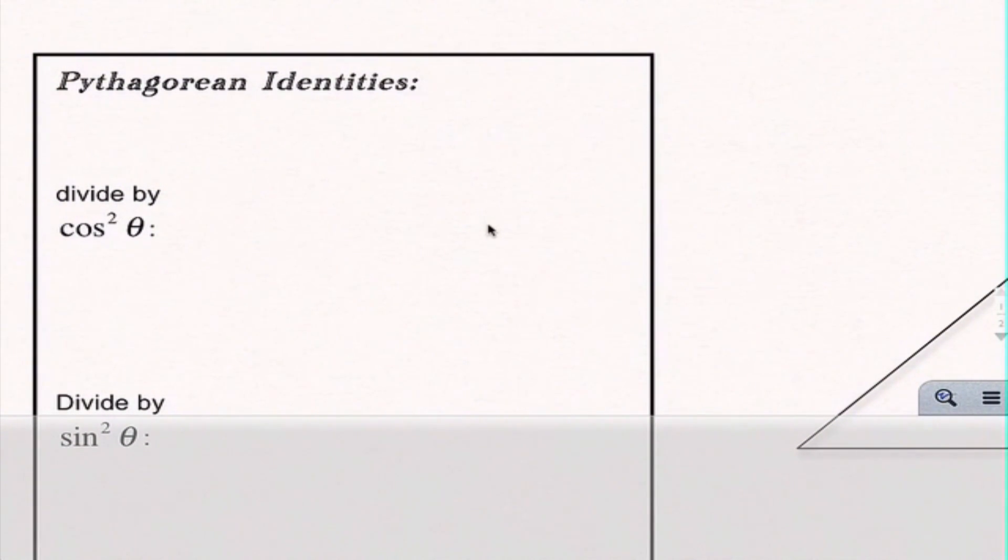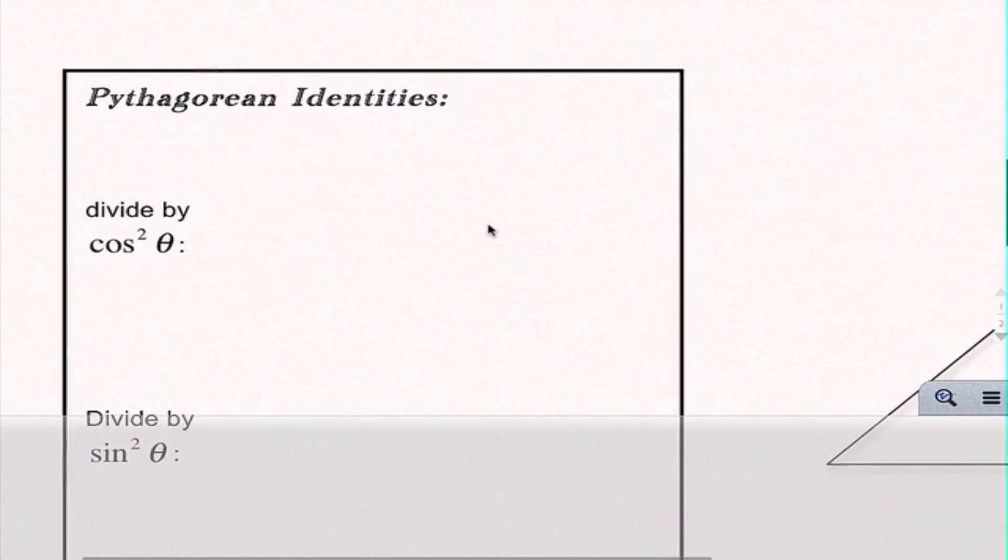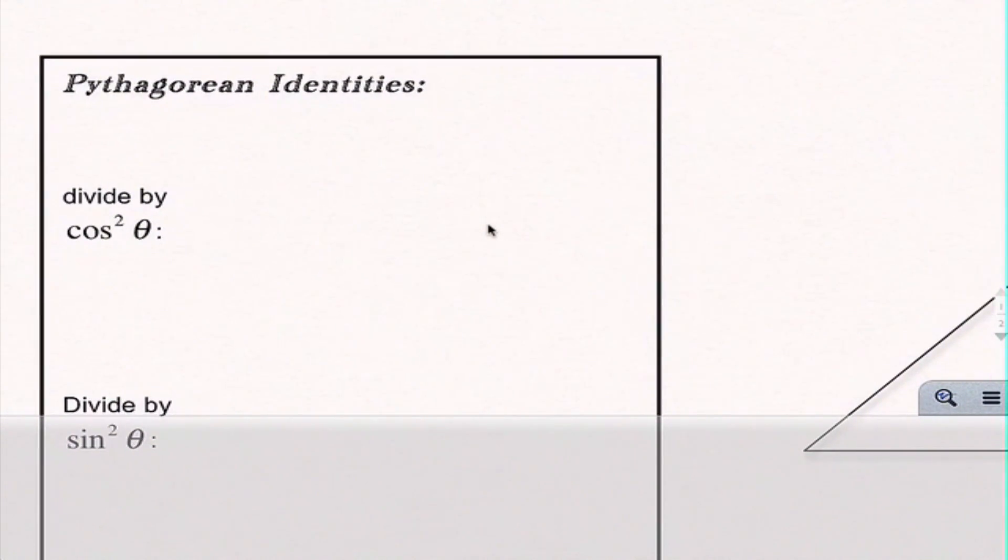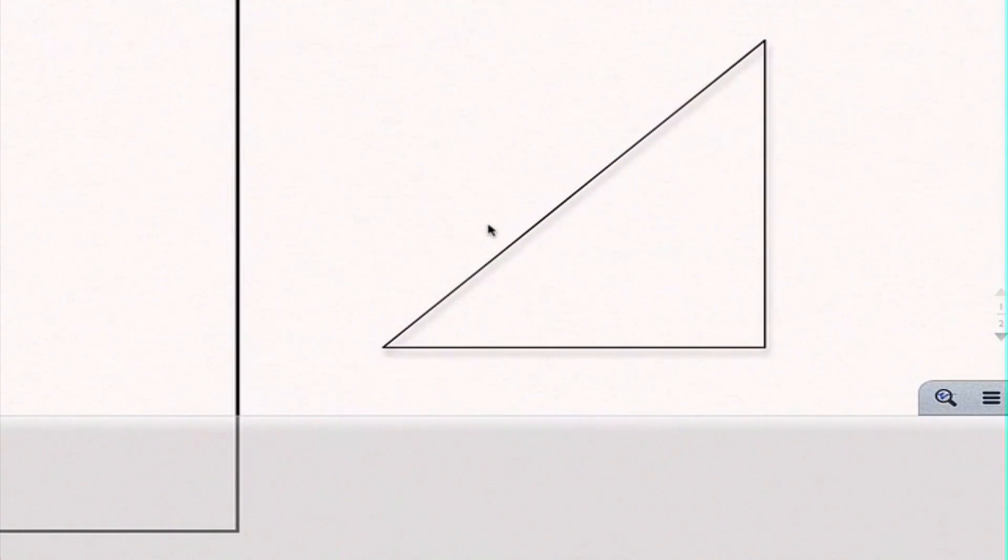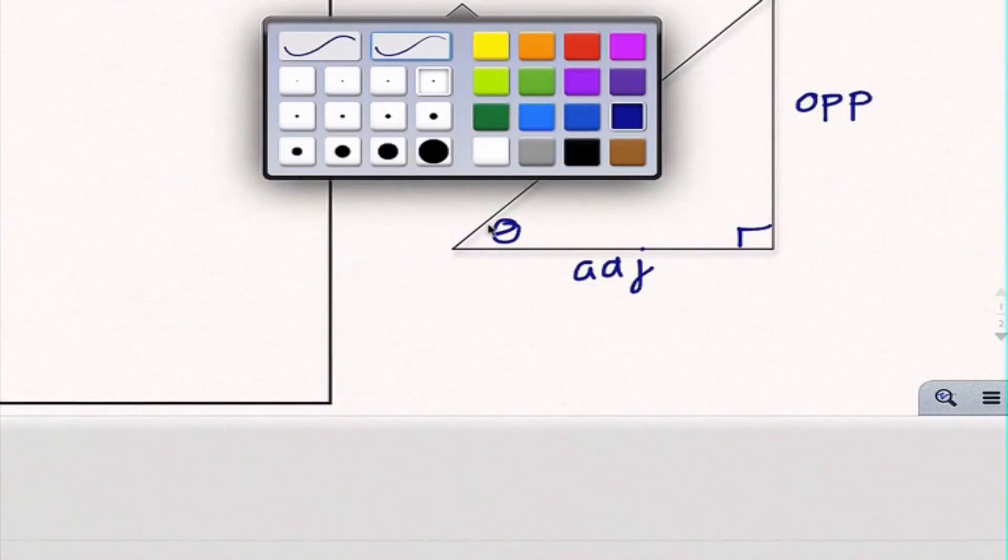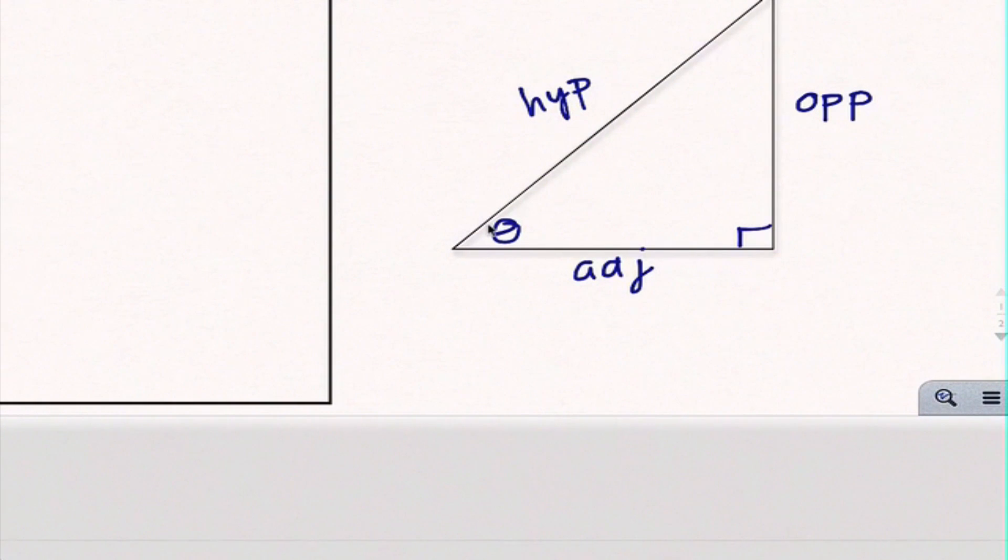The final three are the Pythagorean identities and I'm actually just going to lead you through the first one, and then the second two you guys are going to have to figure out on your own. So I just drew myself a triangle here and I'm going to call theta the one that is closest to the origin. Now I'm going to label all of our sides: the opposite, the adjacent, and the hypotenuse.